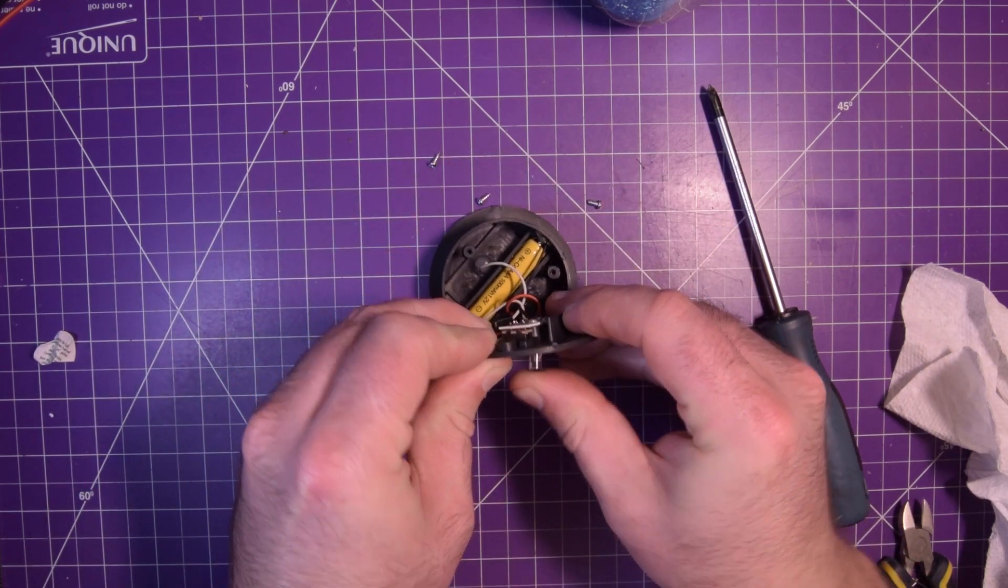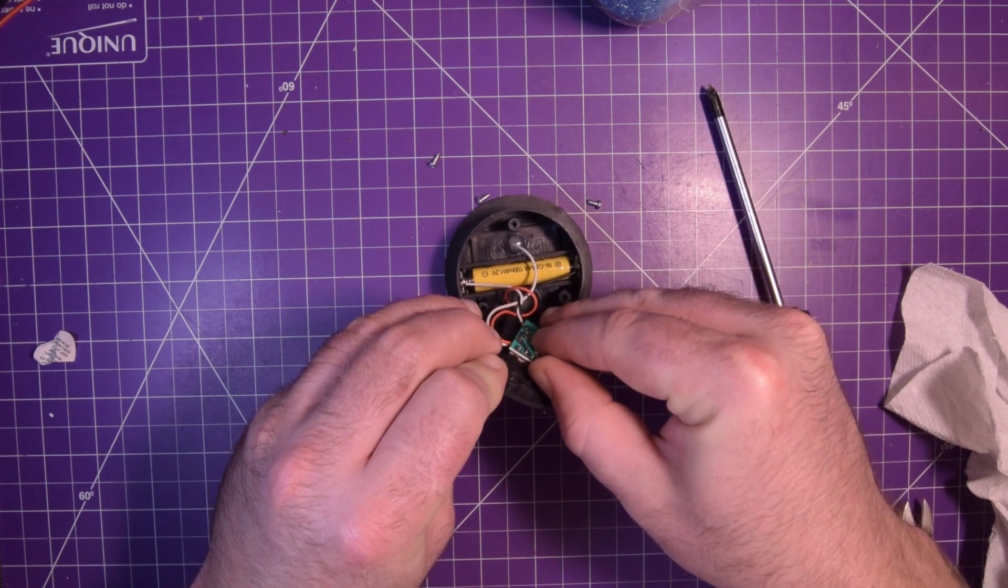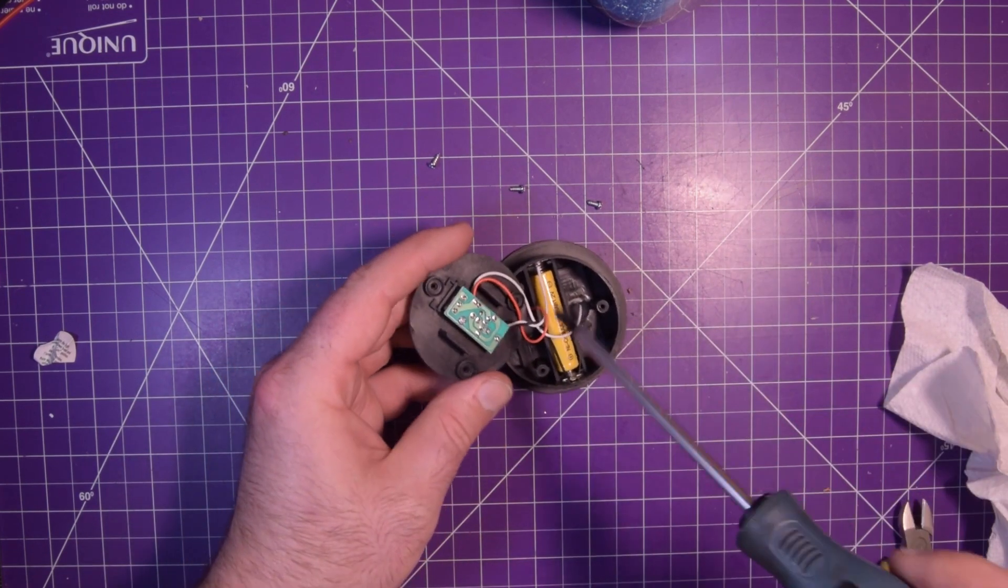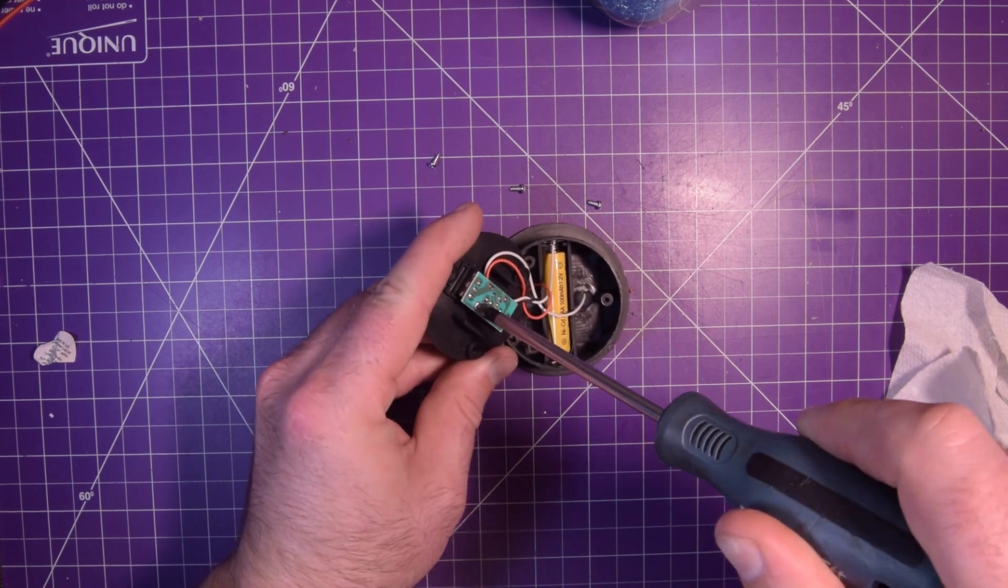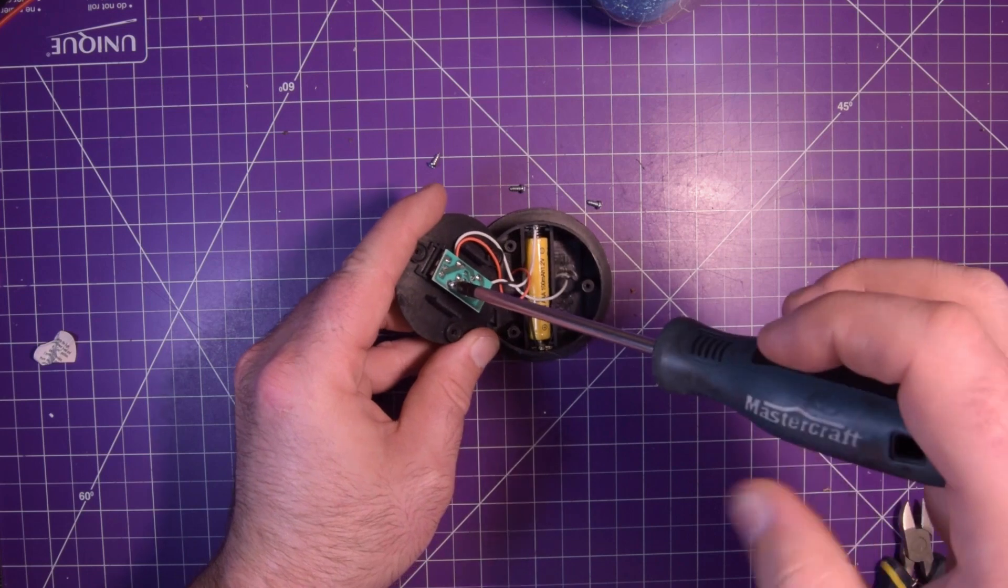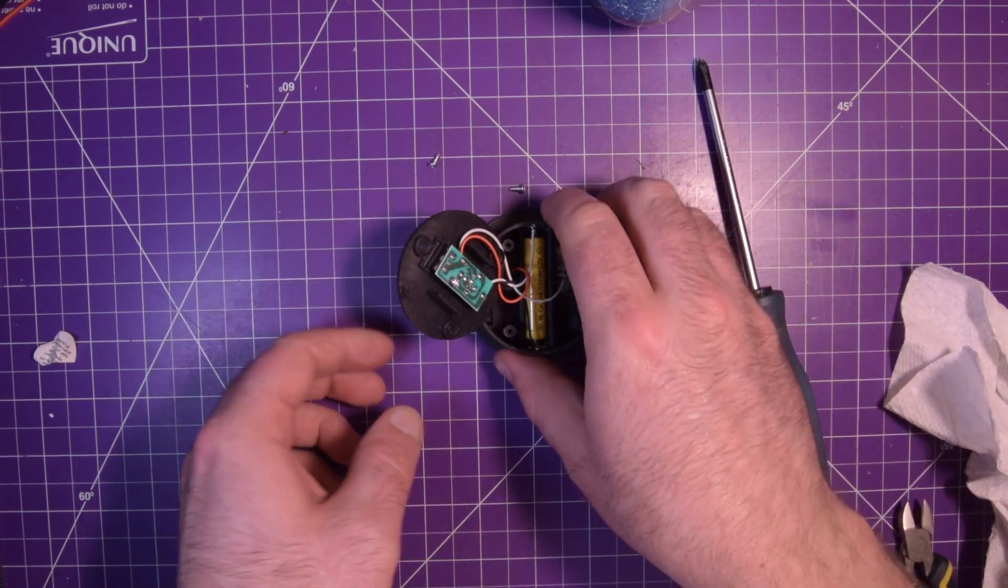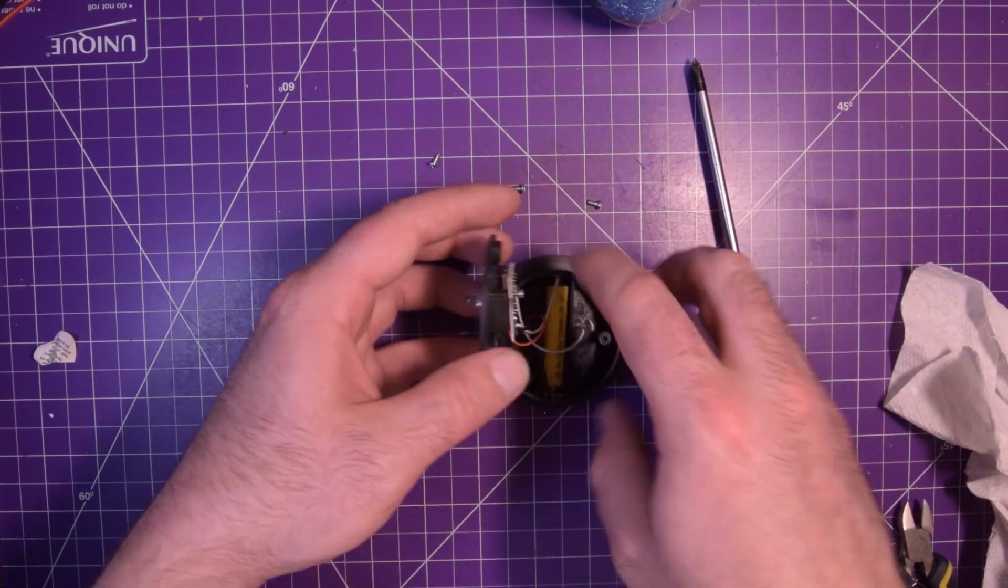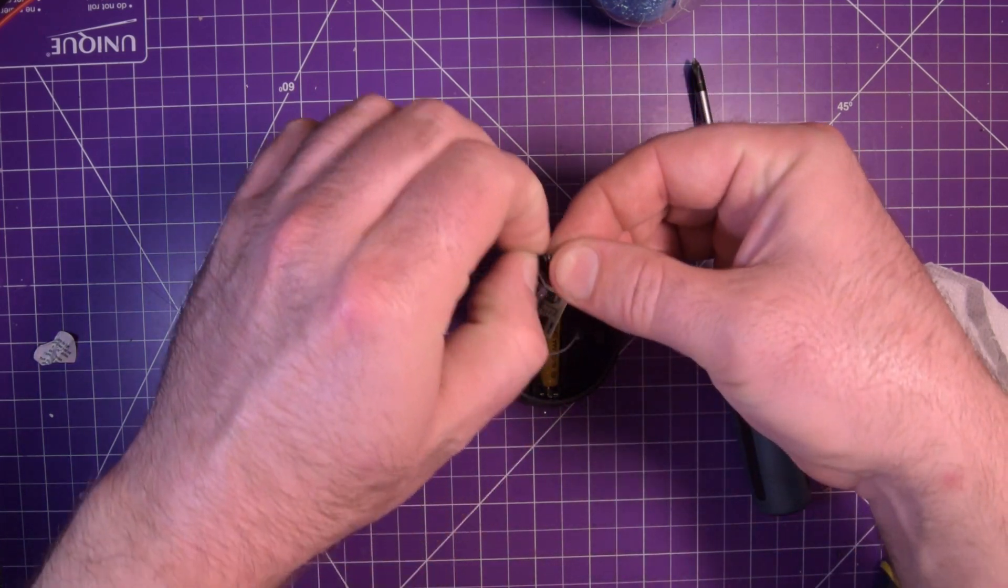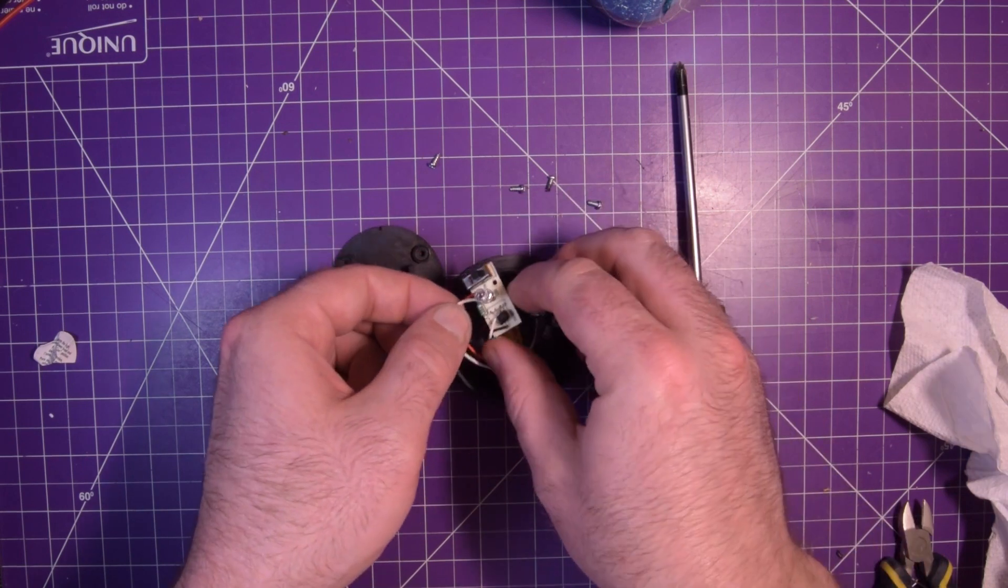I'm gonna try to push that out. Oh, there's a little screw there. And I bet you can't light a white LED with a 1.2 volt battery, so there's going to be a little joule thief circuit.